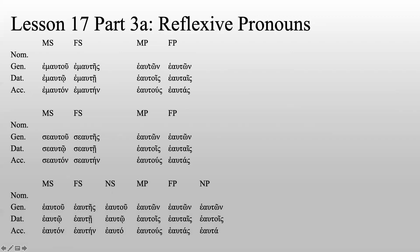Let's look at the plurals now. You will notice heow tone, heow tone, and heow tone are all the same. You'll notice heow toys and heow toys and heow toys are identical. Heow tools, heow tools, and heow tools are also all exactly the same. If you're asked to decline either the first person or second person forms, watch out for those plurals — switch them into the heow tone, heow toys, heow tools forms.